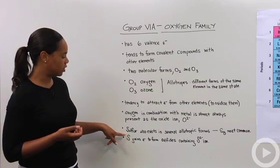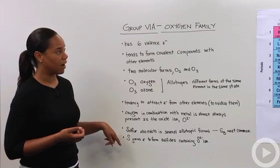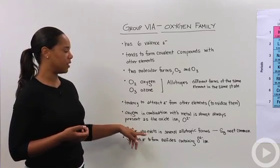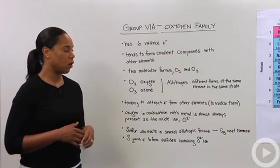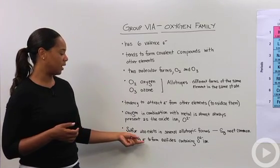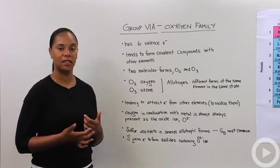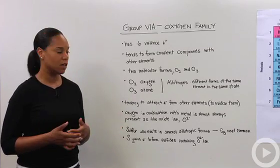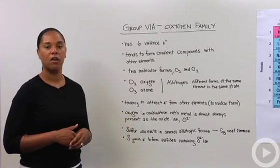Another member of the oxygen family is sulfur, which is right below it. And it also exists in several allotropic forms. One of the most common is S8. And sulfur likes to gain electrons to form sulfides that contain the S2 minus ion. So that's similar to the behavior of oxygen. And that is the oxygen family.